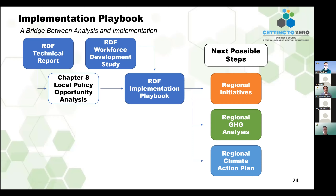El manual de implementación es justamente en el medio entre este reporte y los siguientes pasos posibles. Se pueden ver los siguientes pasos como las iniciativas regionales, asistir a otras ciudades con ordenanzas locales, y la evaluación de estas técnicas. El plan de acción climático regional también es una opción en la mesa que puede aplicarse a través de los condados entre las jurisdicciones locales. La ventaja de esto es que va a tener 25 metas y medidas para un programa colectivo. Con esto, se lo voy a pasar a Rebeca.